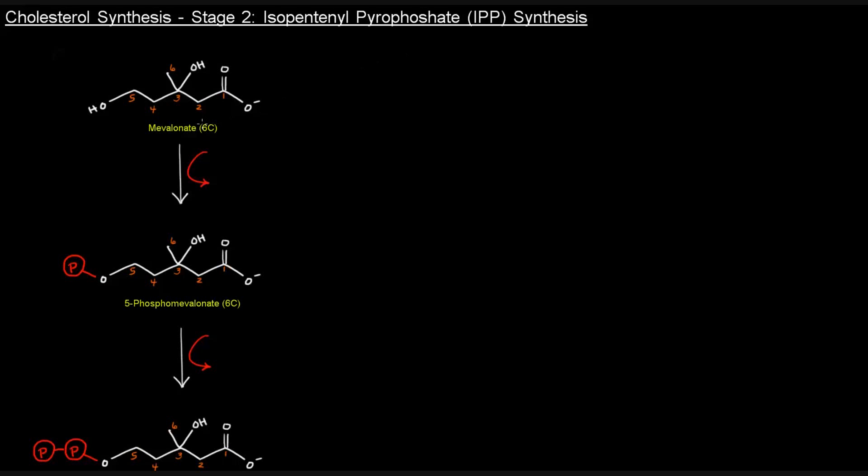We're going to start off here with mevalonate, and we're going to turn it into 5-phosphomevalonate, which basically just has a phosphate group attached to this OH group at the 5-carbon here. So that phosphate is coming from an ATP, so an ATP going to an ADP here, and that is going to be catalyzed by a kinase. Because kinases add phosphates from ATP or GTP to whatever it is they're adding it to, and in this case it's adding it to mevalonate, so it's mevalonate kinase.